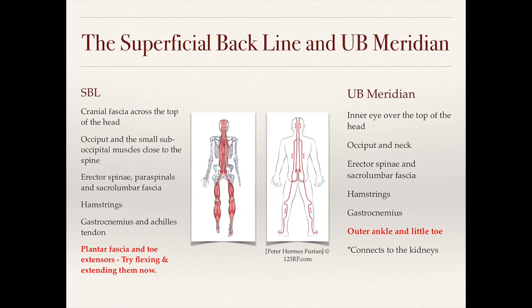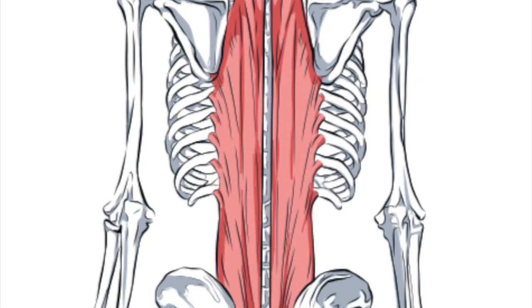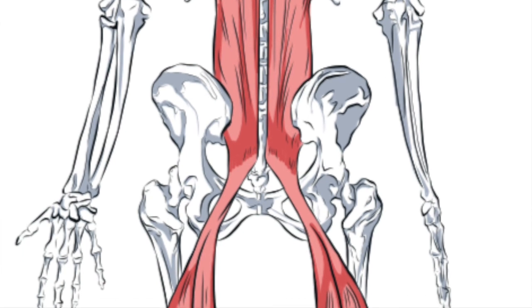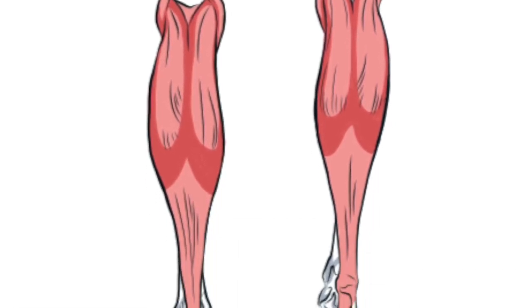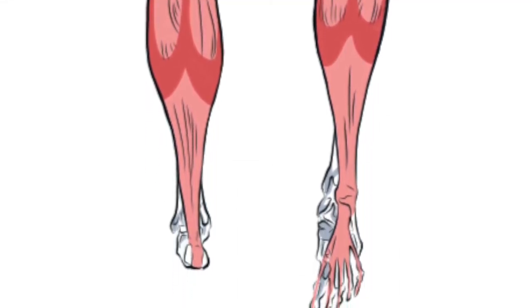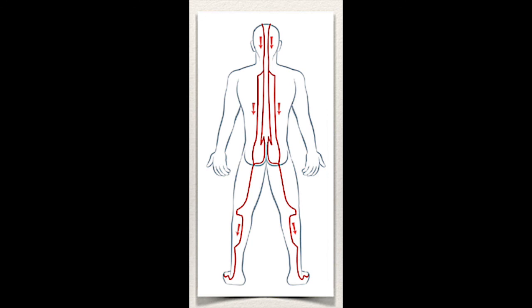The superficial back line includes the cranial fascia across the top of the head, the occiput, the small suboccipital muscles close to the spine, the erector spinae, the paraspinals, the sacral lumbar fascia, the hamstrings, the gastrocnemius, and the Achilles tendon. The urinary bladder meridian begins at the inner eye, goes over the top of the head, includes the occiput, neck, erector spinae, sacral lumbar fascia, gluteus maximus area, hamstrings, gastrocnemius, and into the Achilles tendon.